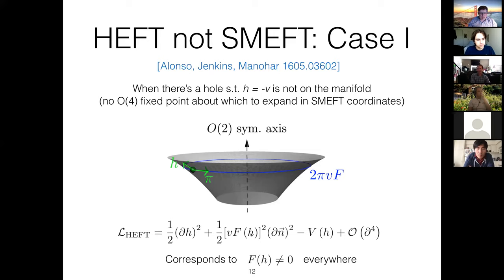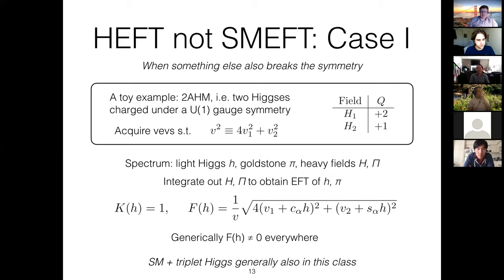Something is missing in that classification. Before we understand what's missing, it's worth asking: what's the physical meaning of having a hole in the scalar manifold? The easiest way to get a hole is to have some other degree of freedom that you integrated out of your EFT that also broke the symmetry.